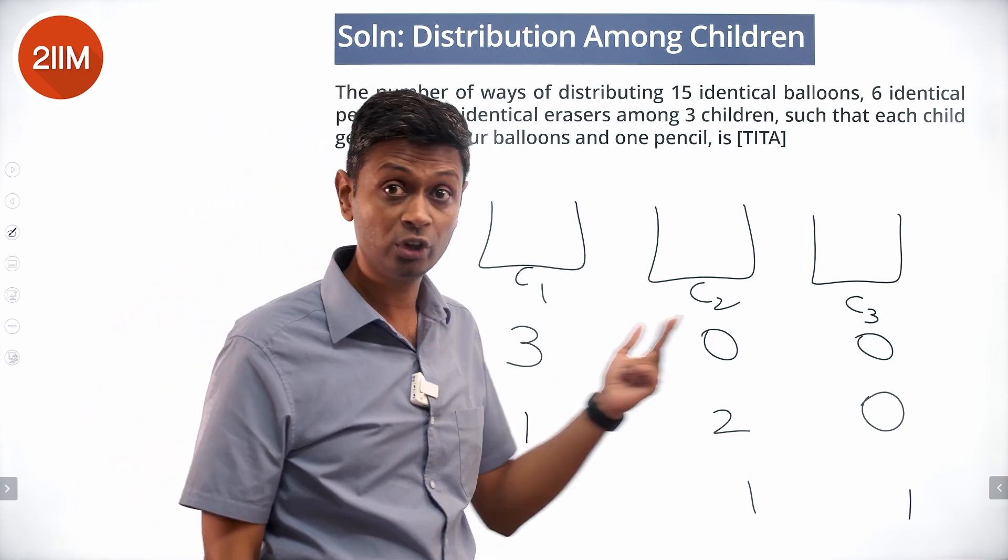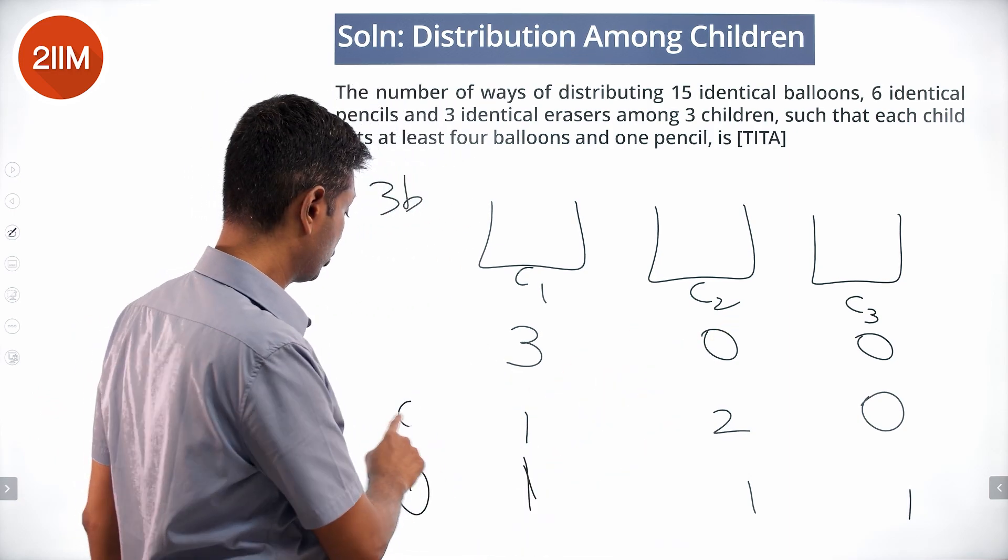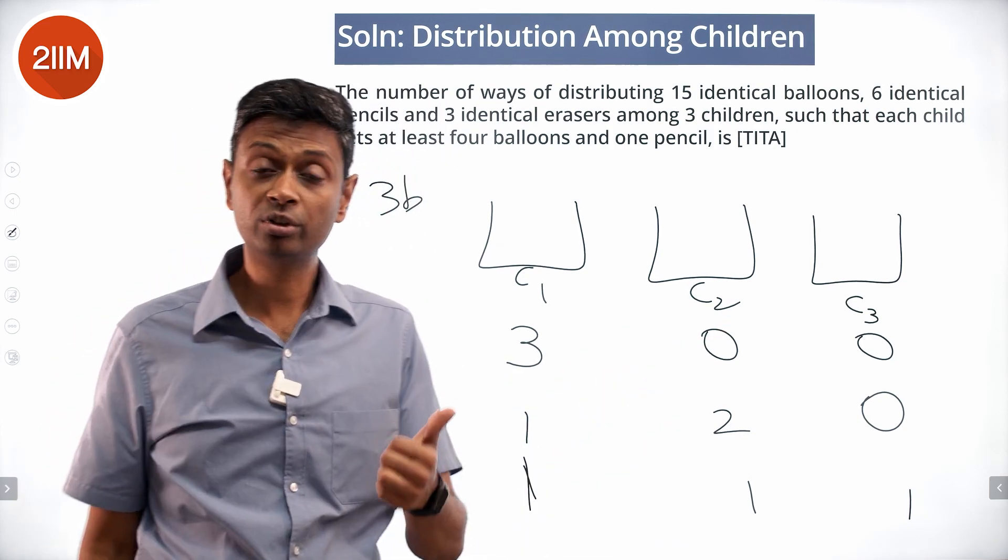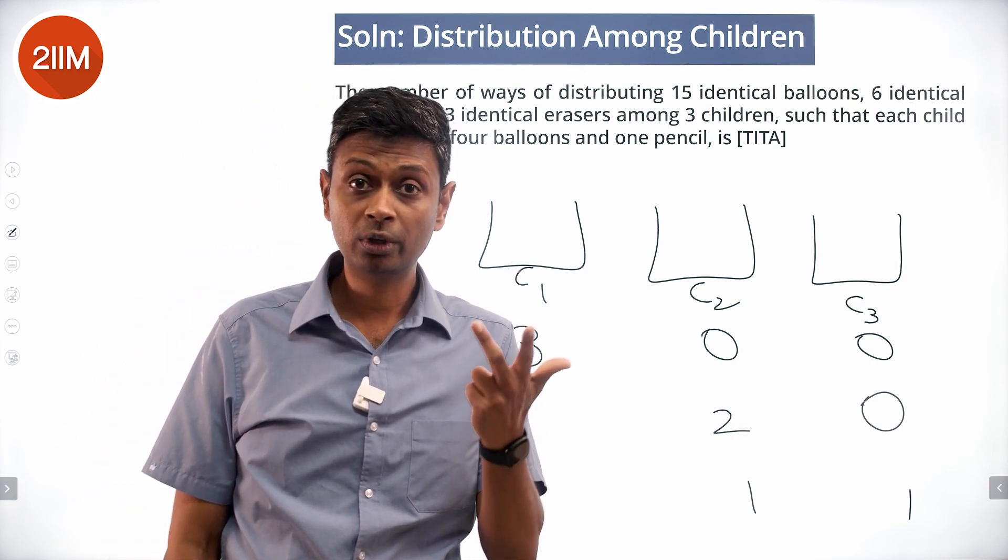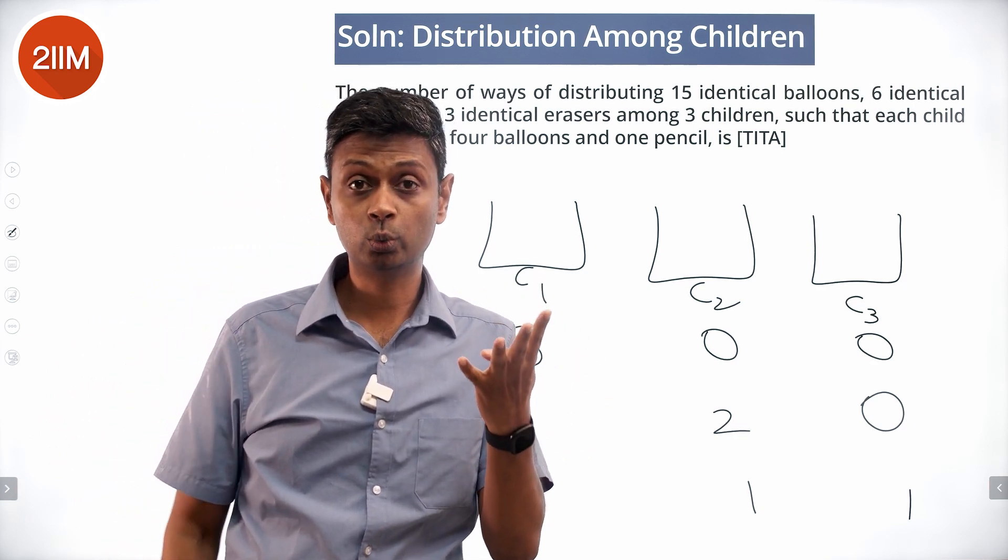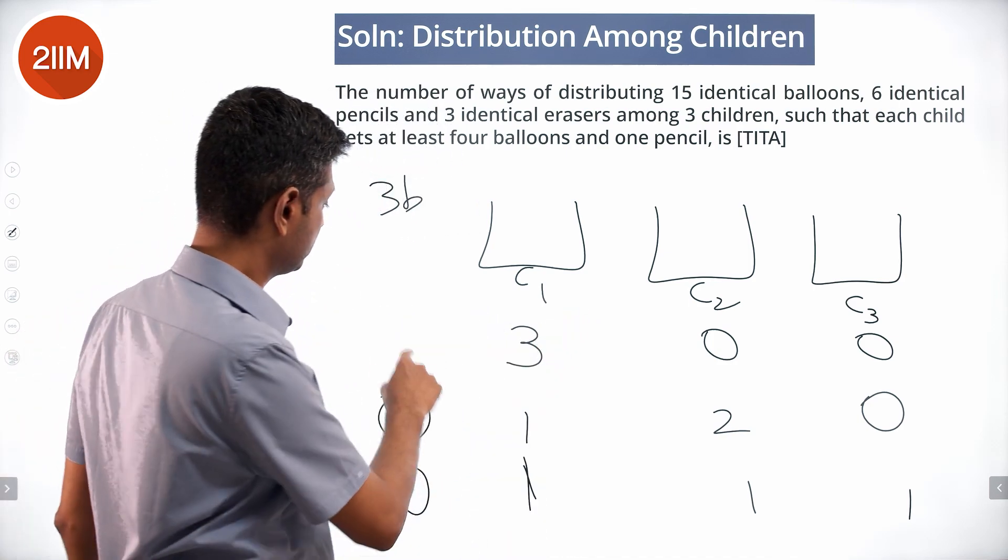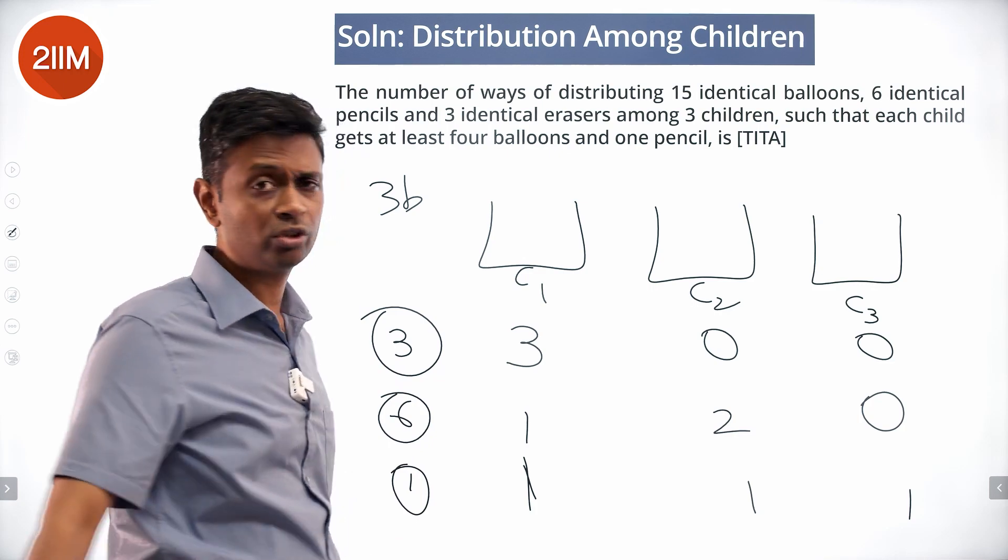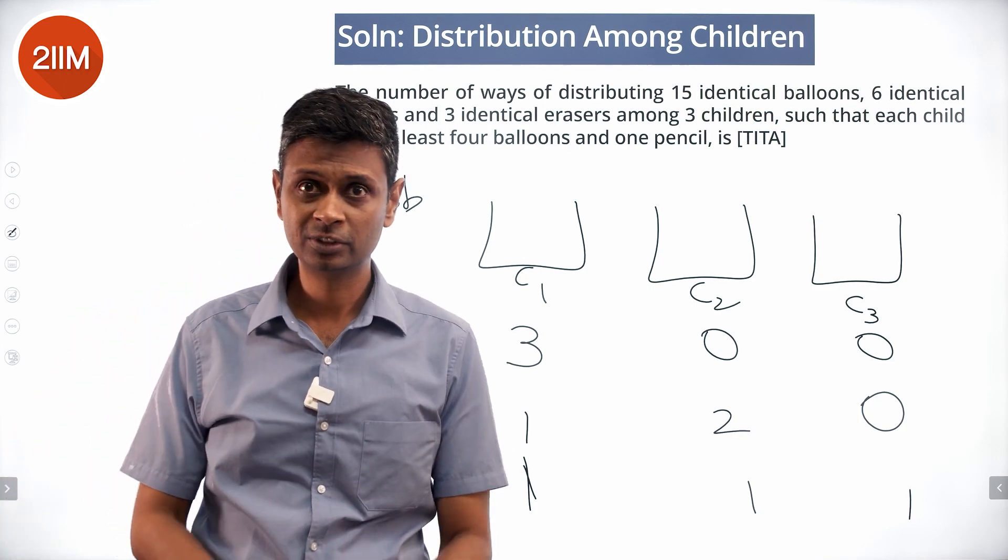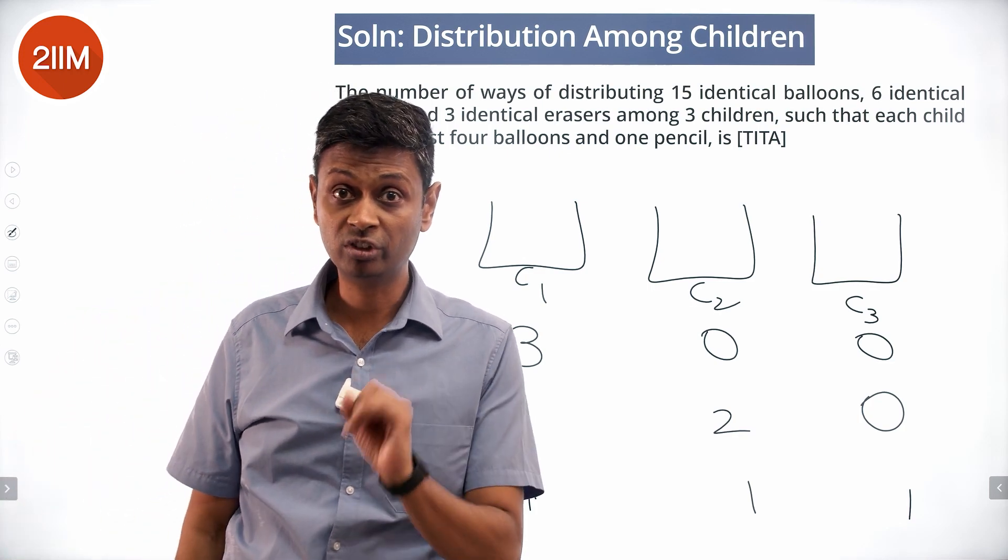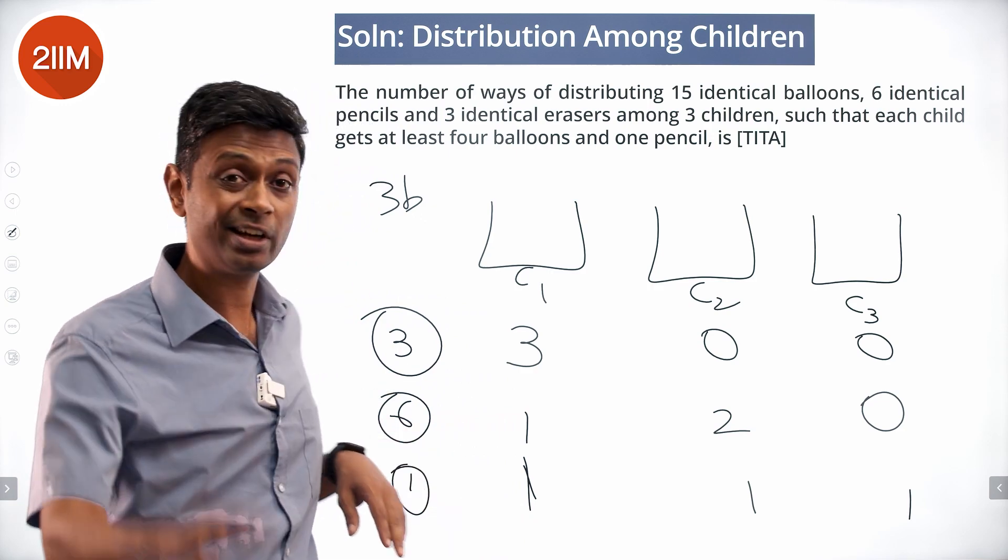One balloon, two balloons, zero balloons can be done in 6 ways. Why? It could be 1, 2, 0, or 1, 0, 2, or 2, 0, 1, or 2, 1, 0, or 0, 1, 2, or 0, 2, 1. 1, 0, 2 being rearranged. 3, 0, 0 can be done in 3 ways: 3, 0, 0, or 0, 3, 0, or 0, 0, 3. Now we found out the number of ways in which we can distribute the 3 balloons.